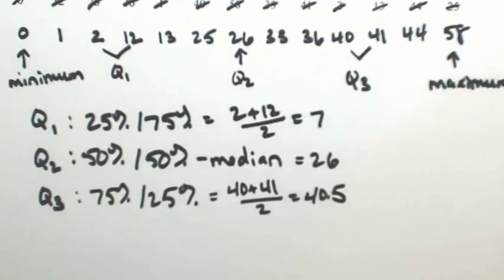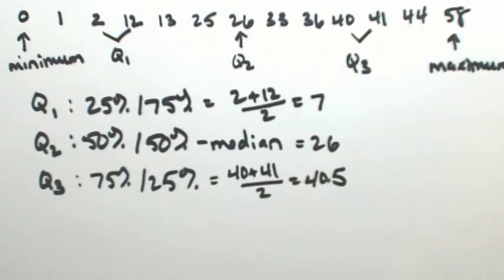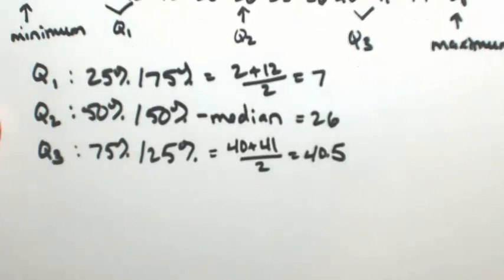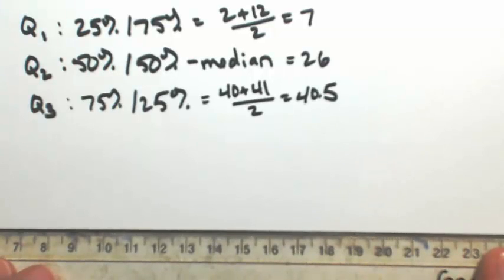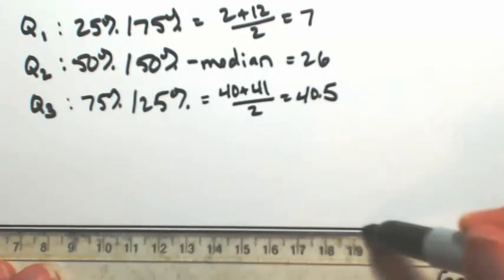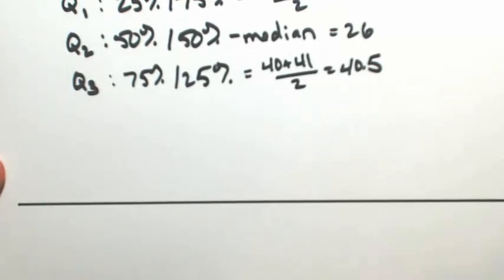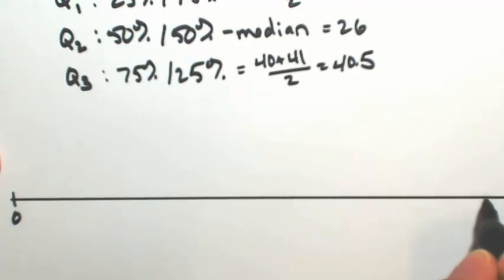So these are all the numbers that we're going to plot. And the way we're going to do this is on a standard number line. We're going to start it at 0, we're going to end it at 58. So I'm just going to draw a number line. Starting at 0 and ending at 58.